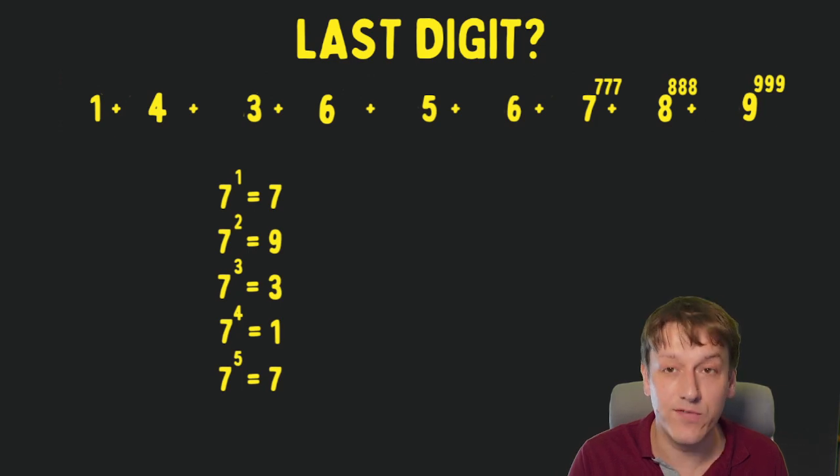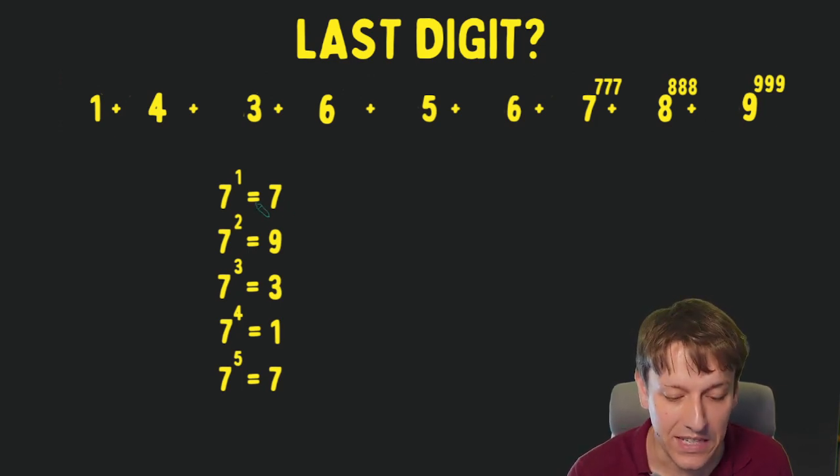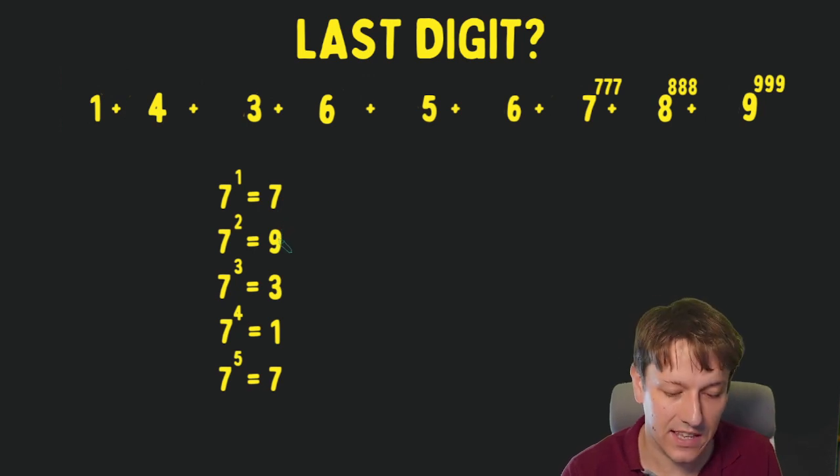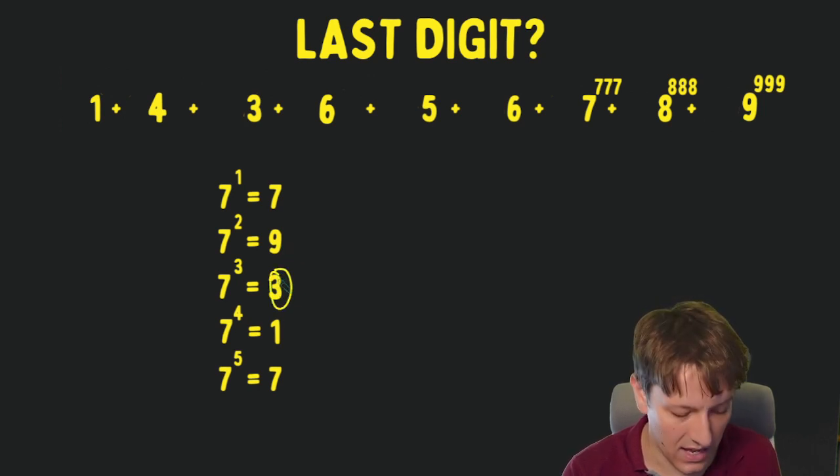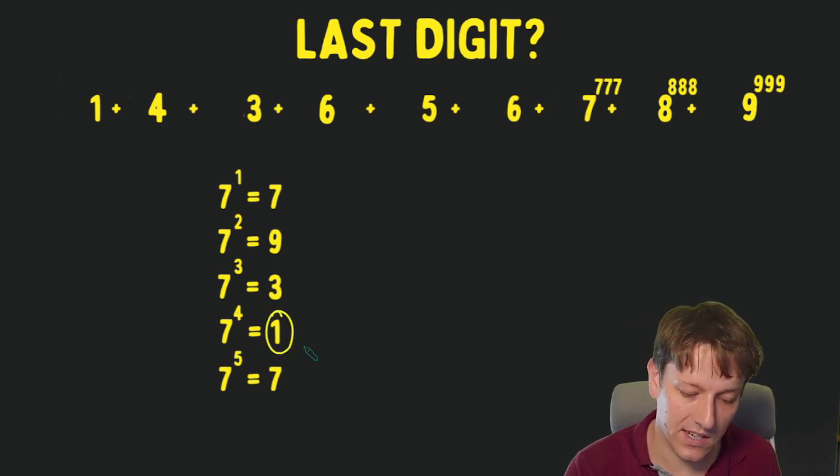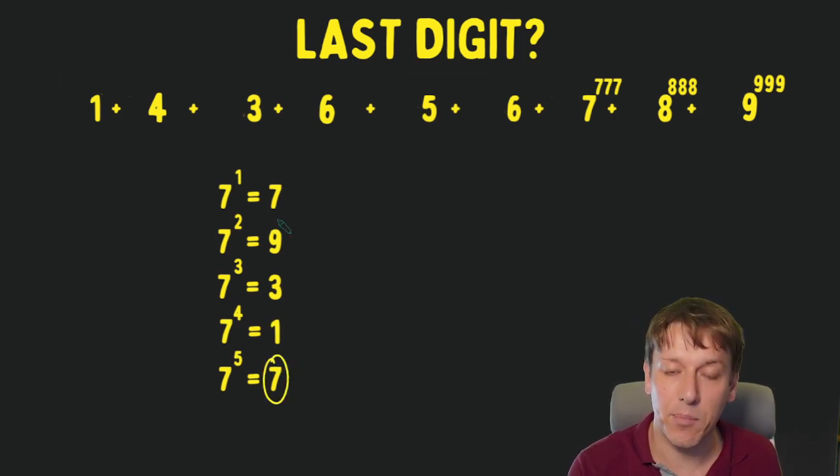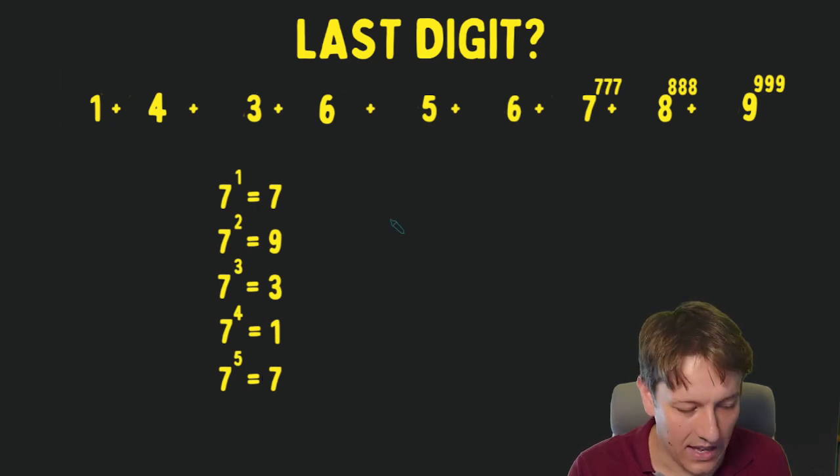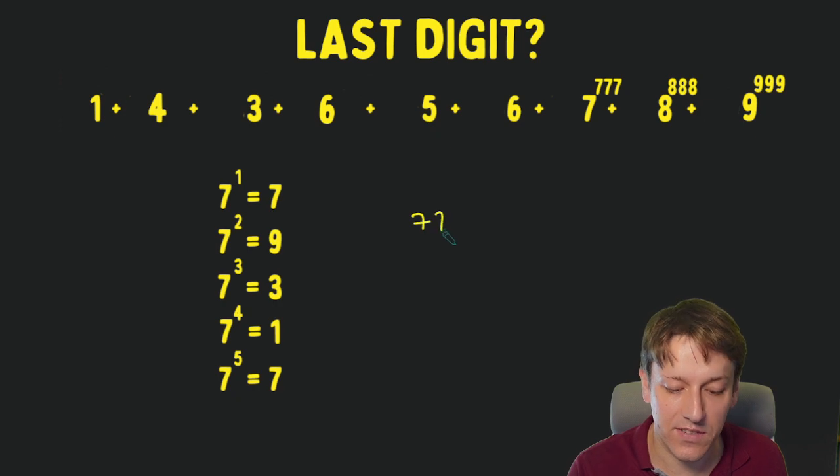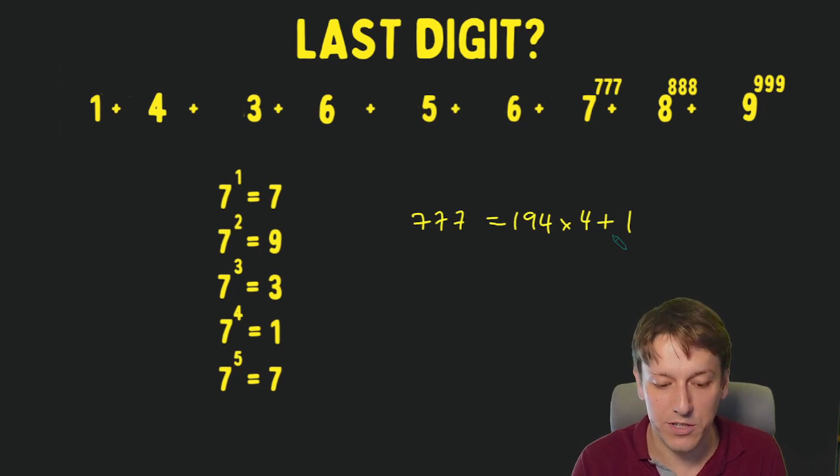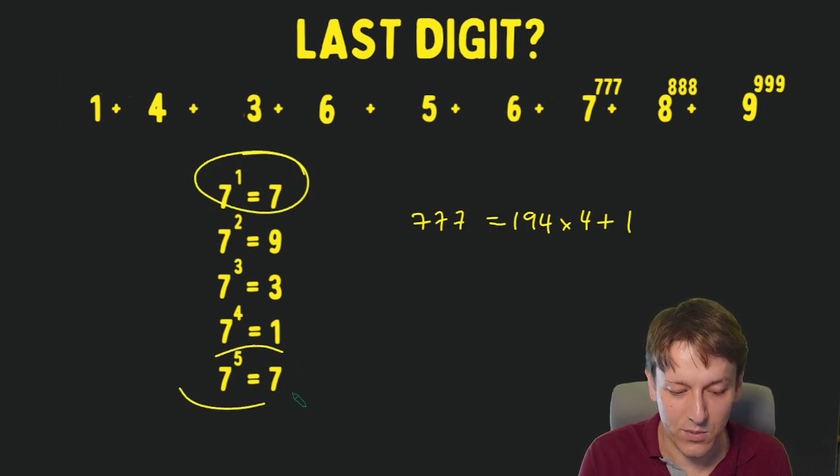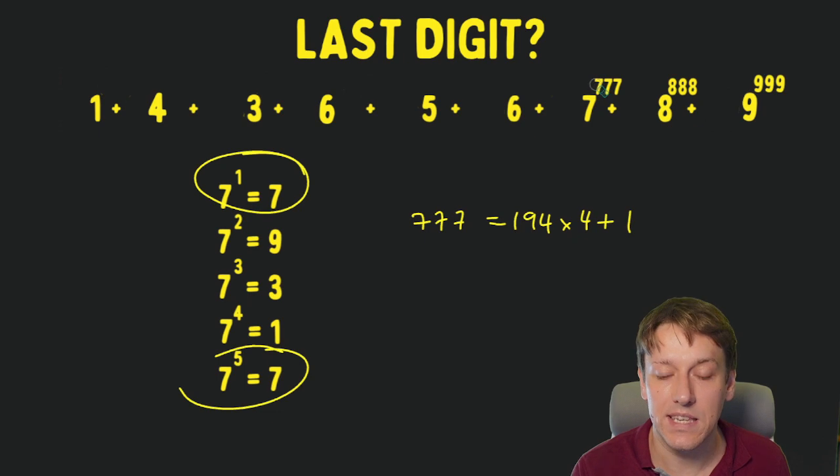For 7 we get a cycle that repeats every 4. 7 times 7 is 49, I just need to take the last digit 9, and then times that by 7 to get 63, I'll take the last digit which is 3 here, and then times that by 7 to get 21, I'll take the last digit of 1, times that by 7 to get 7. Now at that point I know I've got that repeating pattern, and we just need to know where 777 fits into that pattern. 777 is 194 times 4 plus 1, so it's 1 more than a multiple of 4. So the last digit of 7 to the 777 is 7.